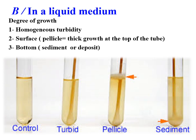In the third tube, there can be a thick pellicle growth at the top of the tube — growth only at the surface. In the last tube, the growth deposits as sediment at the bottom of the tube, indicating equal bacterial growth settling down.